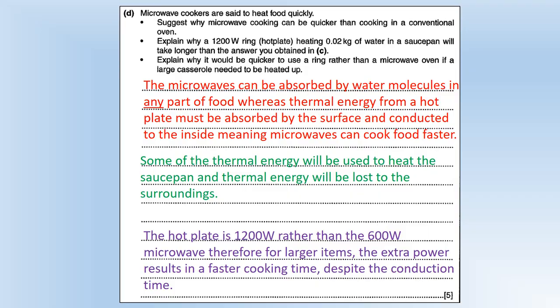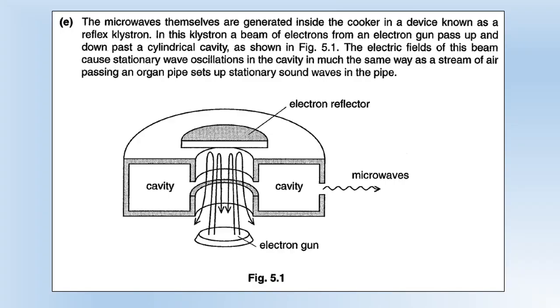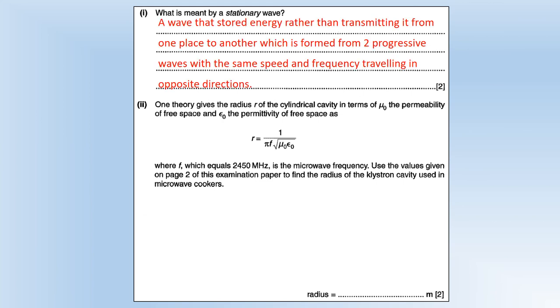The microwaves themselves are generated inside the cooker in a device known as a reflex klystron. In this klystron, a beam of electrons from the electron gun passes up and down past the cylindrical cavity as shown in the diagram. Electric fields of this beam cause a stationary wave oscillation in the cavity, in much the same way as a stream of air passing in an organ pipe sets up a stationary sound wave in the pipe. What is meant by a stationary wave? It's a wave that stores energy rather than transmitting it from one place to another, and it's formed from two progressive waves with the same speed and frequency traveling in opposite directions.